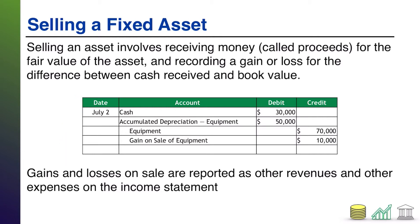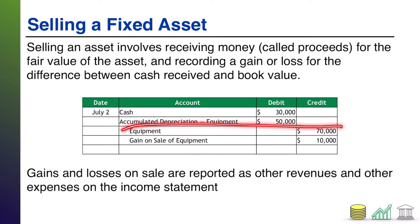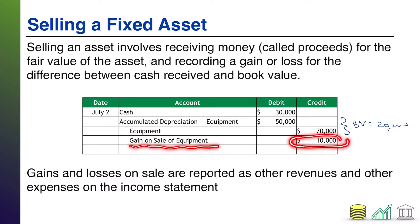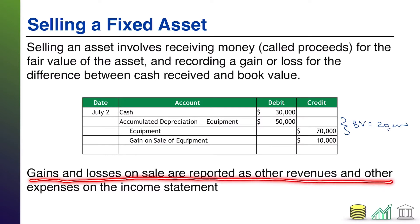Here's an example journal entry where the company received thirty thousand dollars in cash. They sold an asset with a historical cost of seventy thousand and accumulated depreciation of fifty thousand. The book value was only twenty thousand dollars because the asset was originally valued at seventy thousand but fifty thousand in value had been used up, leaving a book value of twenty thousand. Because the company received thirty thousand for it, it gets to record a gain on sale of ten thousand dollars. Gains and losses are reported as other revenues and other expenses on the income statement — that other section, the non-operating portion.